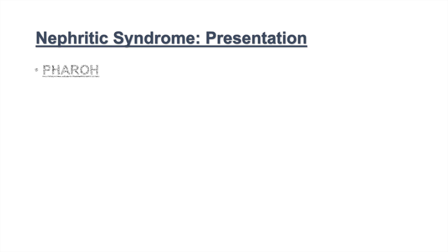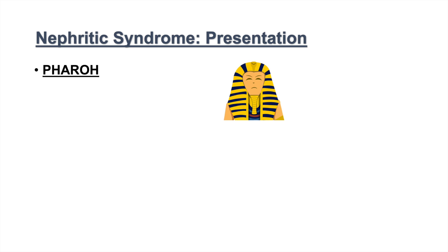The presentation of nephritic syndrome can be remembered with the mnemonic PHARAOH. It's not spelled exactly the same, but this definitely helps us remember the clinical presentation of nephritic syndrome. PHARAOH: P stands for proteinuria. Proteinuria in nephritic syndrome is generally lower — about less than 3.5 grams per 1.73 meters squared per day.